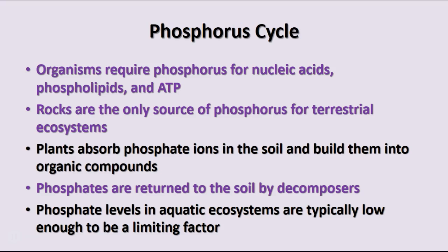All organisms require phosphorus for nucleic acids, phospholipids, and ATP — vital components of cells. The only source of phosphorus in terrestrial ecosystems is basically in rocks. Plants absorb phosphate ions from the soil, use them in their organic compounds, and the decomposers return them. In aquatic systems, phosphorus levels are typically low and are generally a limiting factor in the growth of aquatic plants. When phosphorus is added to an aquatic ecosystem, you often see unbridled growth in the producers, which can be problematic unless there are enough consumers.